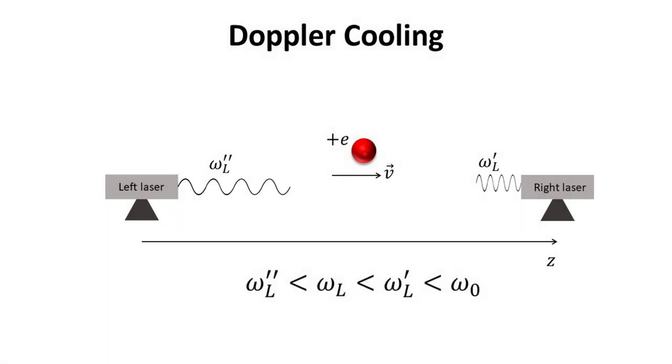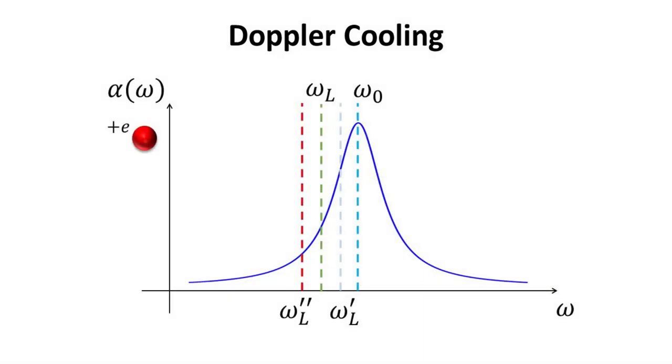Therefore, in our experimental setup, the left side laser appears to have its frequency red shifted when compared to omega L, while the right side laser appears to have its frequency blue shifted. These laser frequencies are designed such that they are all smaller than omega 0.